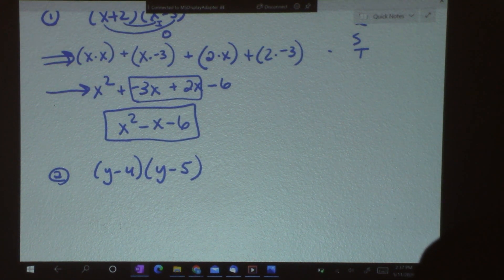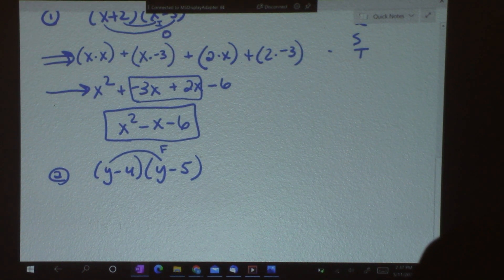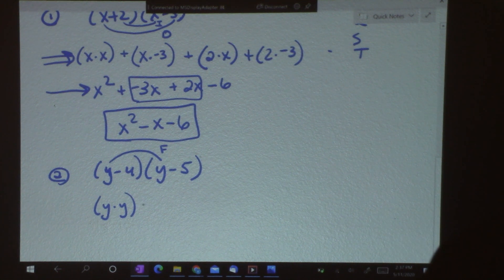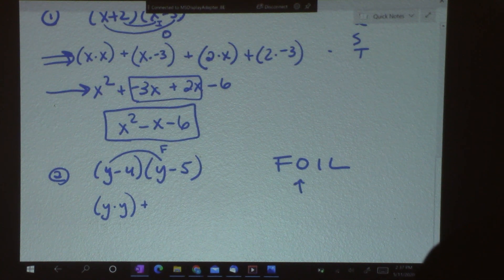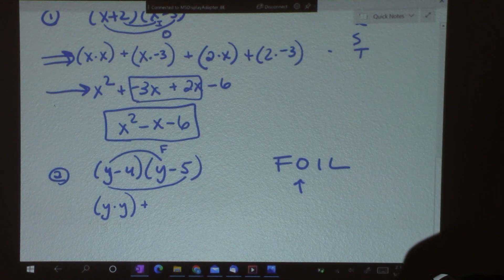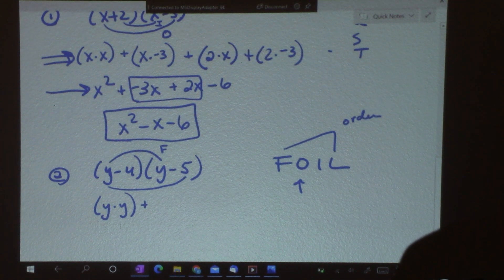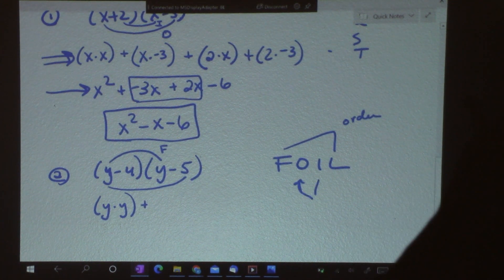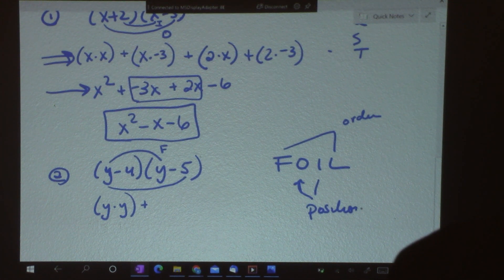Alright. So, we're going to look first at the first. So, y is first in this parenthesis. y is first in the second. So, I have y times y. And I'm going to add that to FOIL. What's next? Outside. So, the two that are on the outside, we could say that first and last refers to order. And outside, inside refers to position.